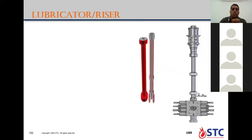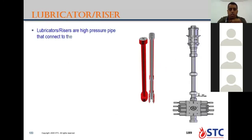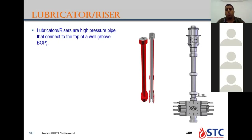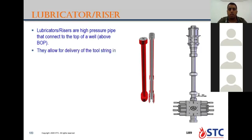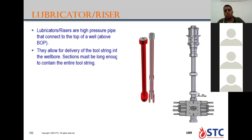The lubricator or riser section: normally the lubricator has the same pressure rating as the pressure control equipment or BOP, connected above the BOP assembly to contain the whole length of the assembly or the coil tubing string plus any fishing assembly you will retrieve from the well. You need extra riser or lubricator — extra length above the height for the coil tubing string. Rated working pressure can be up to 15,000 PSI; standard lengths are 2, 4, 6, 8, 10 foot.